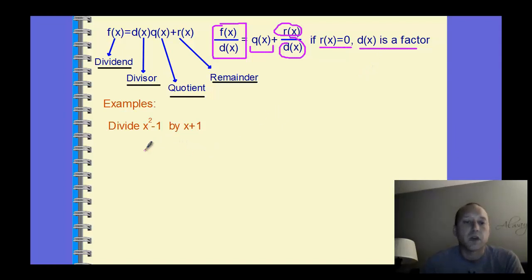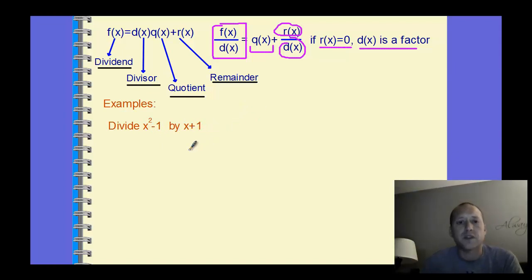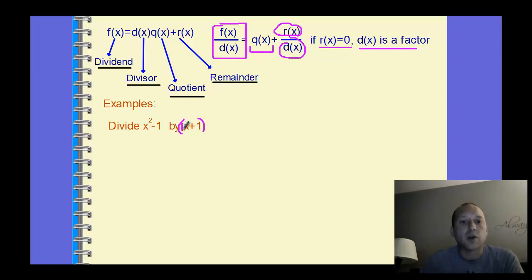For this example, x squared minus 1 divided by x plus 1, there are two ways: synthetic division and long division. We use synthetic division whenever we're dividing by a binomial with a leading coefficient of 1. We may need to adjust the factor to have a coefficient of 1, but we can synthetic divide whenever we have this binomial form.